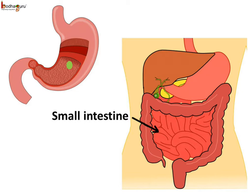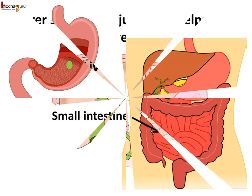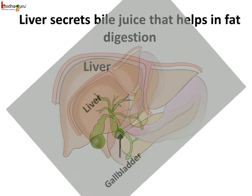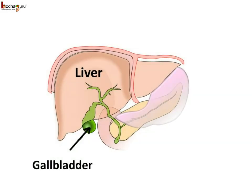The digestive juices in the small intestine start to break down the food. You may have heard that a healthy liver is important for good digestion, but the food doesn't go through the liver — so how does it help? The liver secretes a chemical called bile juice, which helps in the digestion of fat. The liver is a reddish-brown gland situated in the upper part of the abdomen on the right side, and it is the largest gland in the body. The bile juice secreted by it is stored in a sac called the gallbladder, and is then released into the small intestine.